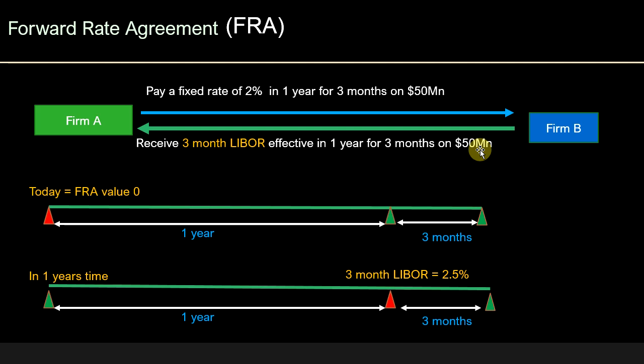So why would Firm A do this? Assume that Firm A has another commitment to pay the LIBOR interest rate for a three-month period on a 50 million notional. Firm A's biggest worry would be what happens if the three-month LIBOR in one year's time increases, say to 5% or 6%, making the interest expense very high. To protect itself, Firm A has entered into a forward rate agreement to pay 2% and receive the three-month LIBOR.